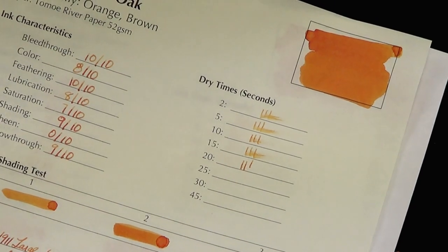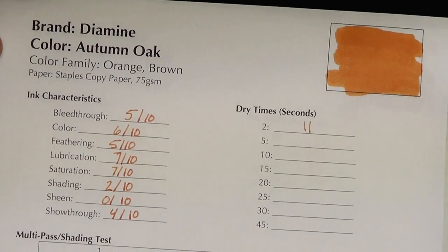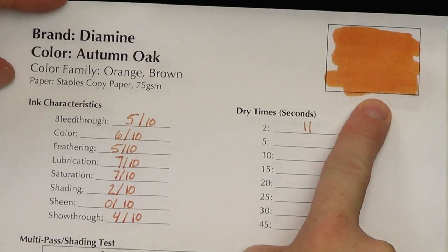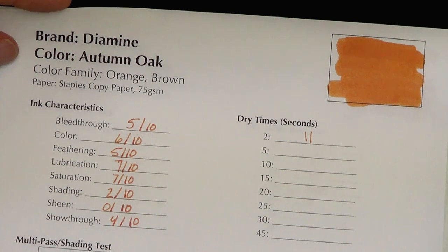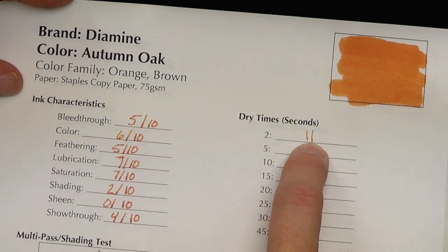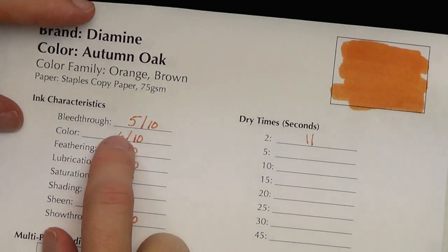Now onto the cheap copy paper. And unfortunately, this is where the ink kind of falls apart for me. So this is the Staples 75 GSM or 20 pound bottom of the rung copy paper. There is no shading on this paper. There's just absolutely no shading. You'll notice the dry times are actually really good. This ink soaks right in and it's in. So even at two seconds, there was nothing to get here. In terms of bleed through, that's, it's not good. It's just not good at all.